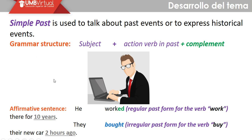Within that structure we have the subject, the verb in past, and the complement. There are two types of verbs: regular and irregular. Regular verbs generally add a D or ED depending on the word ending. Irregular verbs change their grammatical form more substantially. 'For ten years' refers to a determined time in which a person did a certain action, different from the second example which refers to a specific point — 'two hours ago,' 'one day ago.'